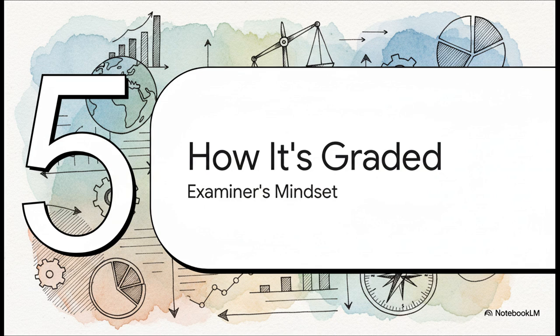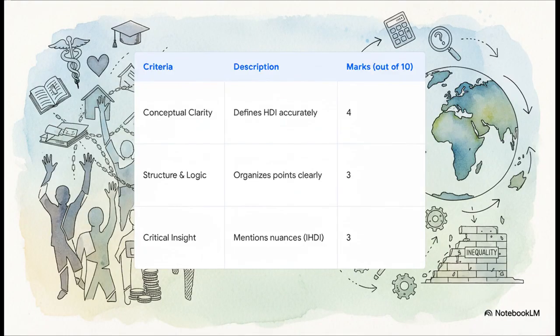To really win the game, you've got to think like the person grading your paper. Let's pull back the curtain and look at a likely grading rubric for a 10-mark question like this. Look at how the points break down: conceptual clarity gets you a solid four marks, having a good structure gets you another three. But check out that last one — critical insight — that's worth three whole marks. That's where you get points for mentioning things like the IHDI or questioning the arbitrary weighting. Almost a third of your grade comes from thinking, not just from memorizing.